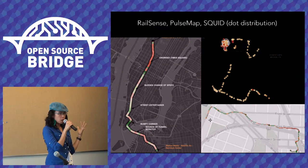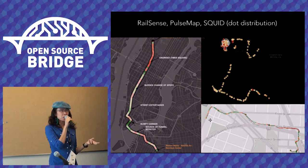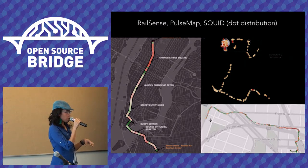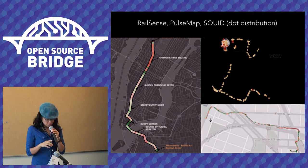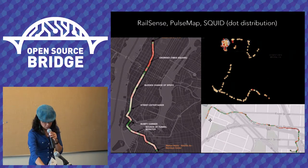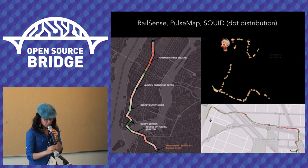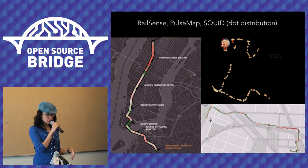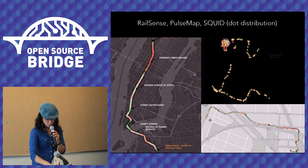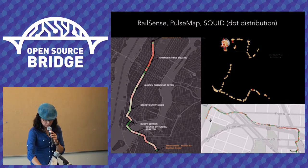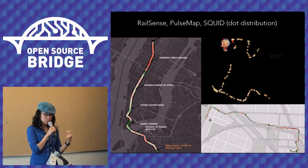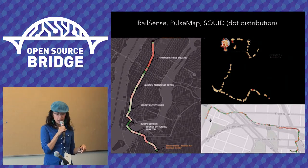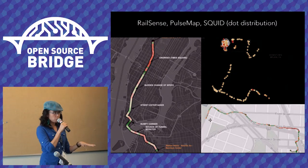They were looking at the most and least rider-friendly subway lines — New York has an organization called Strap Hangers that rates different subway lines. This group used EEG to look at the most and least rider-friendly lines. Red indicates levels of high attention. They annotated things they were observing in conjunction with the mental experience. On the right is a pulse map — the instrument was tracking pulse, and three students were walking around Brooklyn and Manhattan looking for patterns between individual pulse and environmental change.